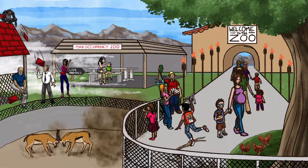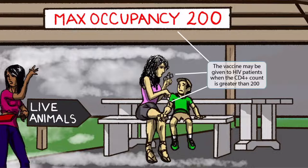We've shown a mother and a child under this pavilion. The mother is giving this diabetic child a shot of insulin and is about to place a band-aid on him. They're sitting under a pavilion that says 'Max Occupancy 200.' The band-aid is a symbol for AIDS/HIV, the syringe represents the vaccine, and the Max Occupancy 200 sign represents a CD4 positive count of 200. This should help you remember that the vaccine may be given to HIV patients when the CD4 count is greater than 200. If the CD4 count is less than 200, the vaccine should be avoided because a live vaccine in an immunocompromised patient can potentially cause disease.